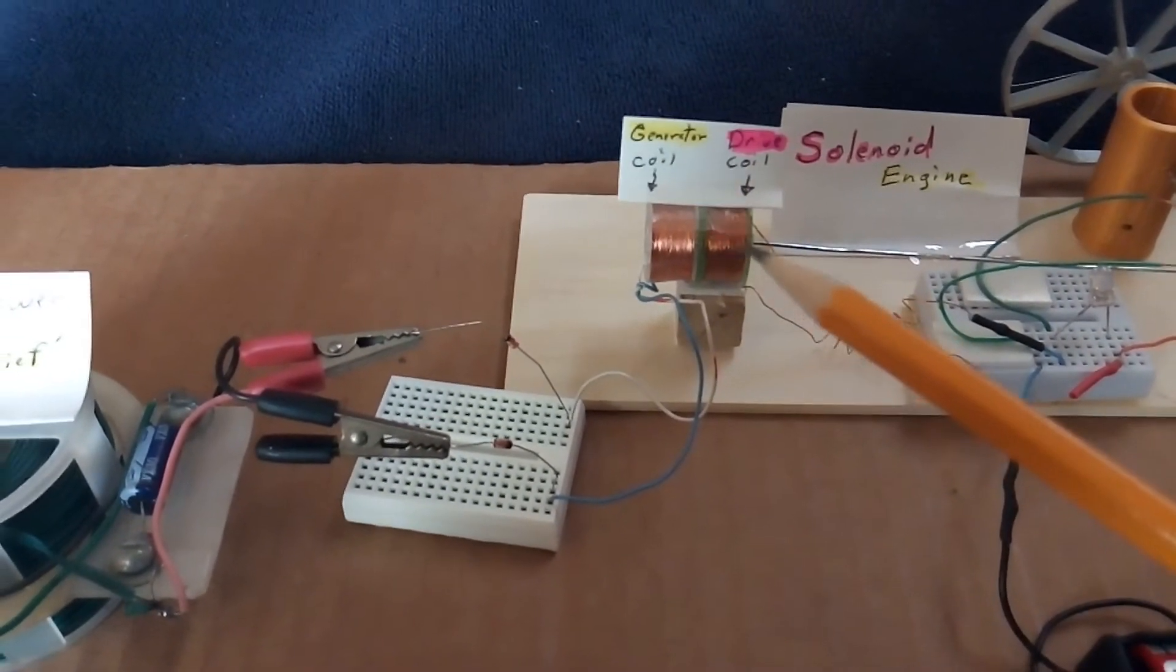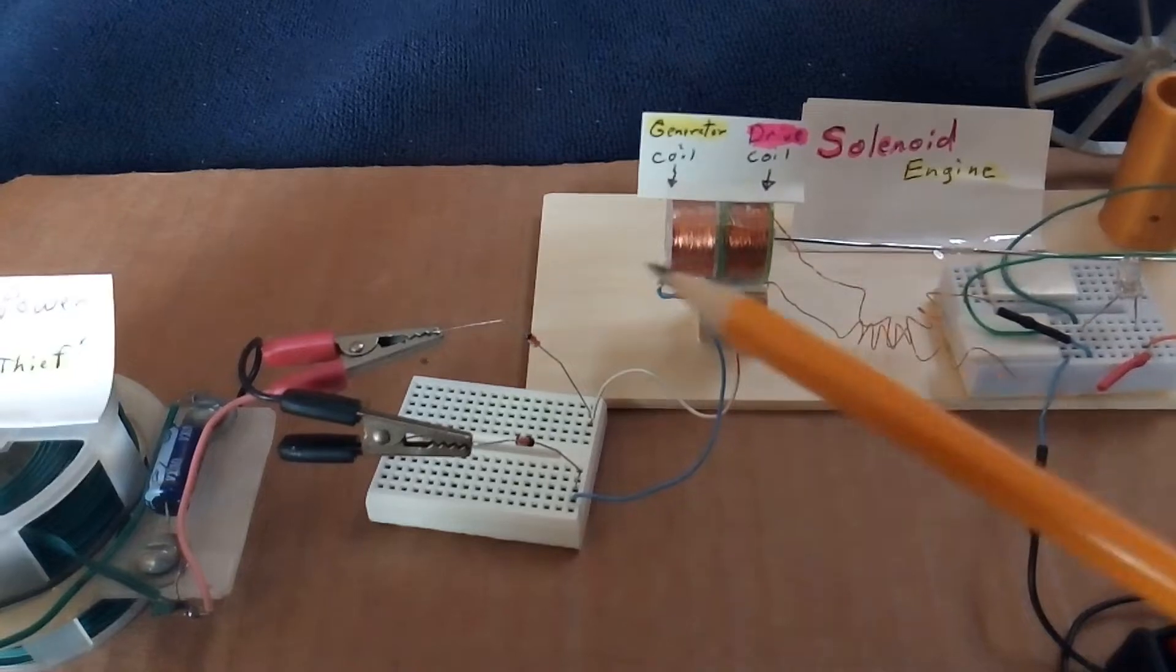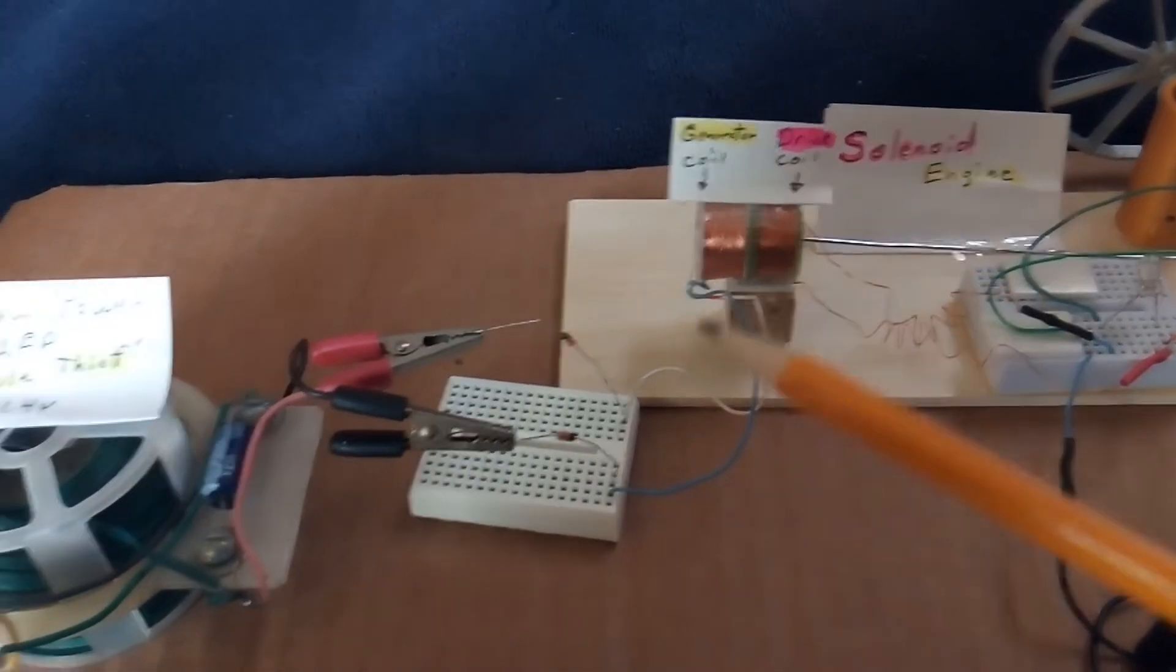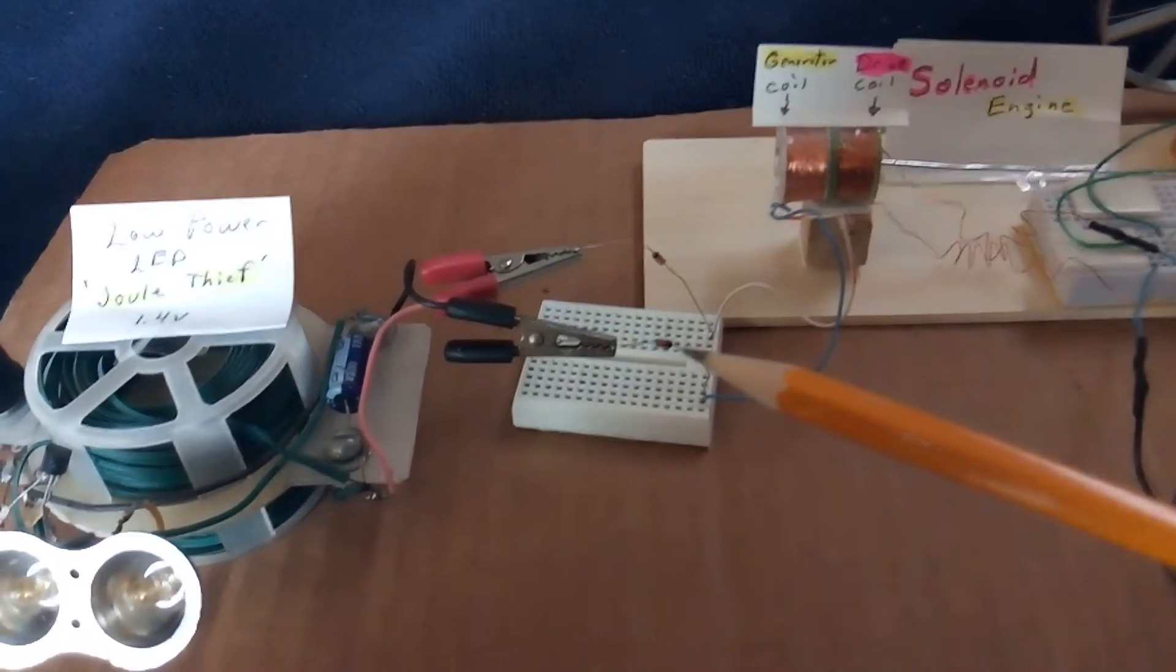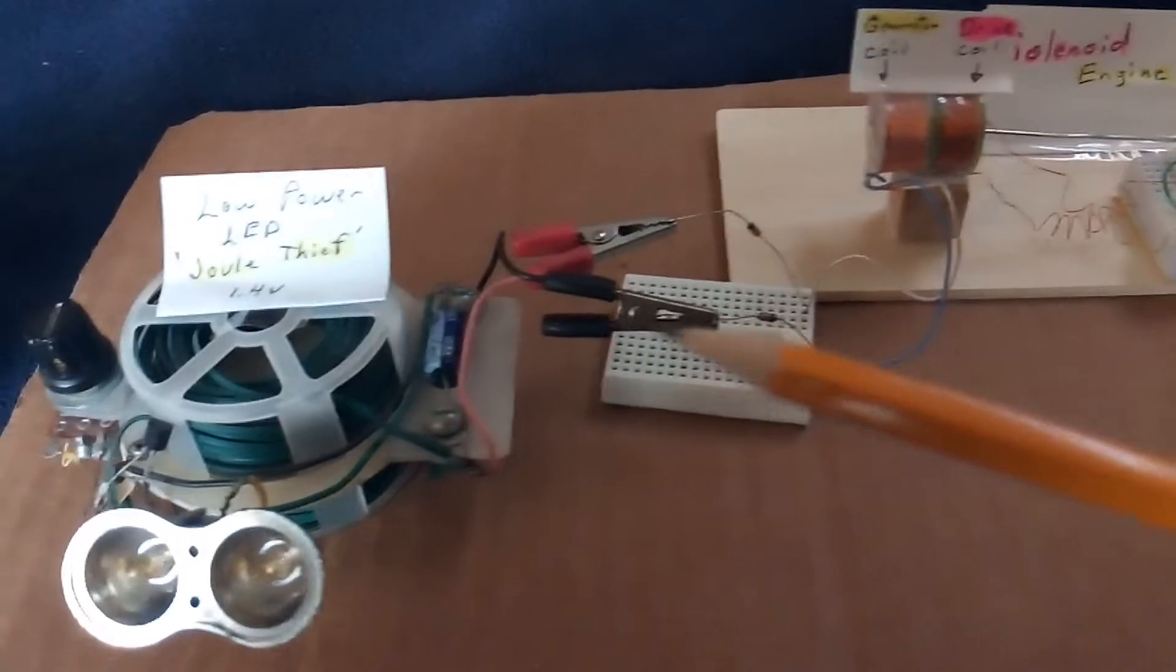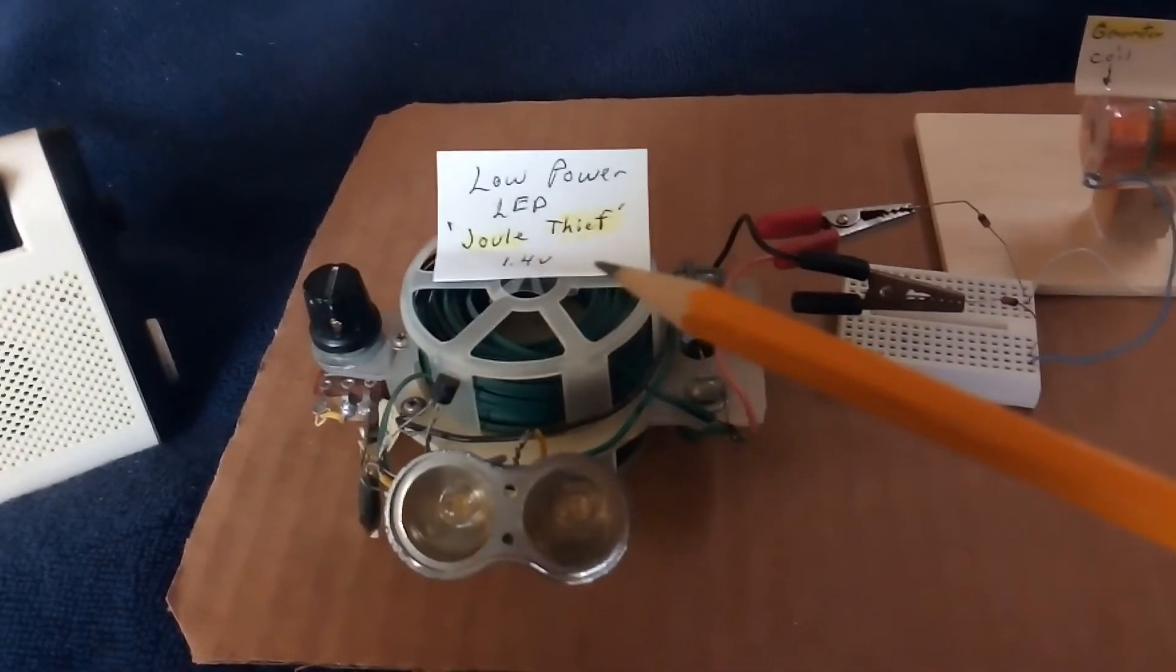So as the magnets move back and forth inside here, these two coils are separate. The generator coil's coming out here with a couple of diodes to half rectify it, and then going into this joule thief.